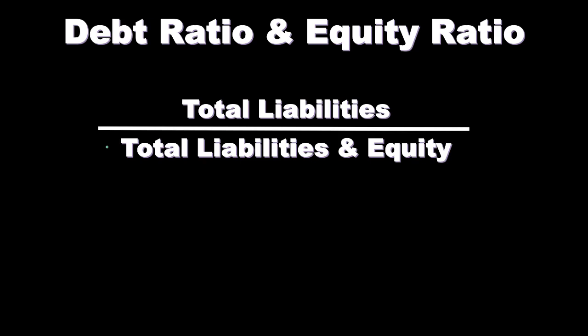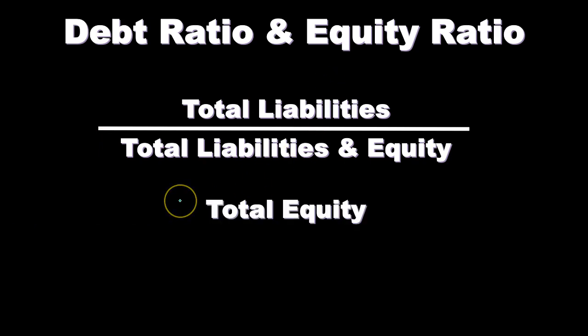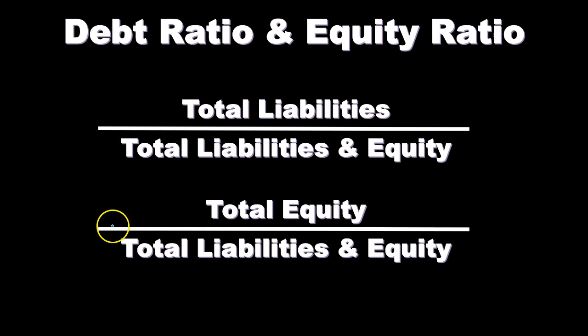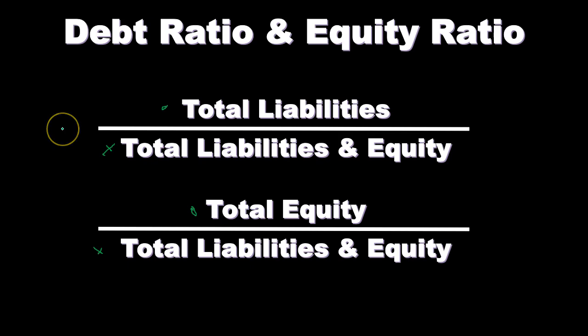The total liabilities and equity is the same as total assets, because the accounting equation is assets equal liabilities and equity. This ratio gives us the percentage that is liabilities compared to equity. The equity ratio is total equity divided by total liabilities and equity. Since total liabilities and equity is made up of those two components, these two ratios will add up to 100 percent.